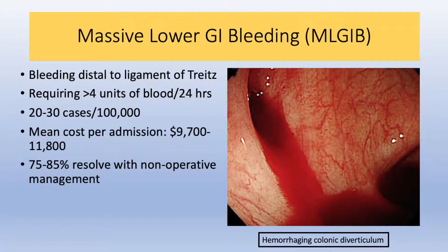Massive lower GI bleeding is defined as hemorrhage distal to the ligament of Treitz that results in the need for more than four units of blood in a 24-hour period. This occurs in about 20 to 30 cases per 100,000, and it can be a costly occurrence due to the need for transfusion and surgical and non-surgical interventions.